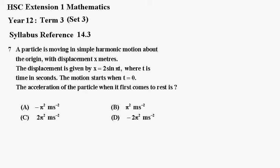Number 7. A particle is moving in simple harmonic motion about the origin. The displacement is x meters. The displacement is given by x equals 2 sine pi t, where t is time in seconds. The motion starts when t equals 0. The acceleration of the particle when it first comes to rest is